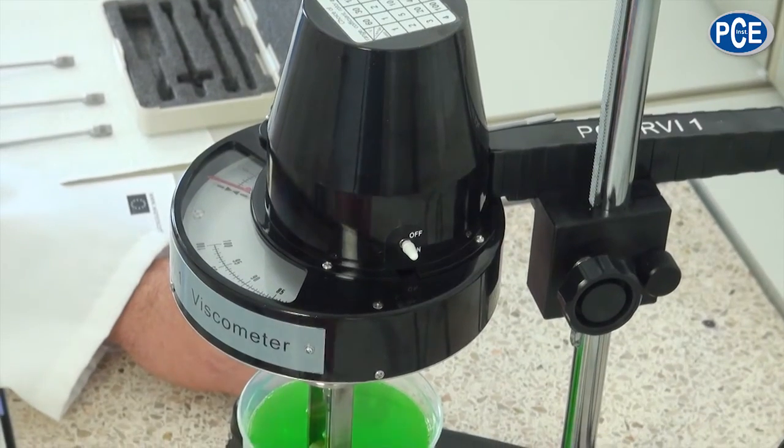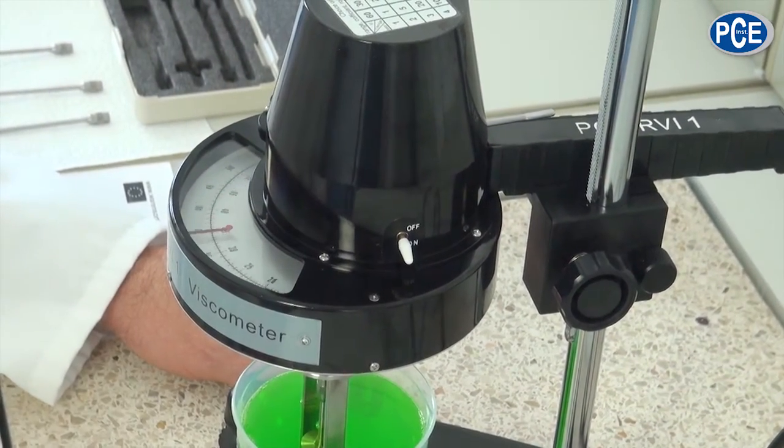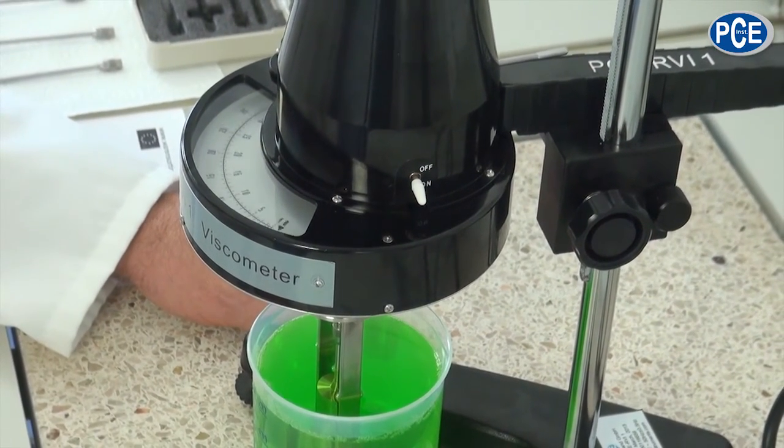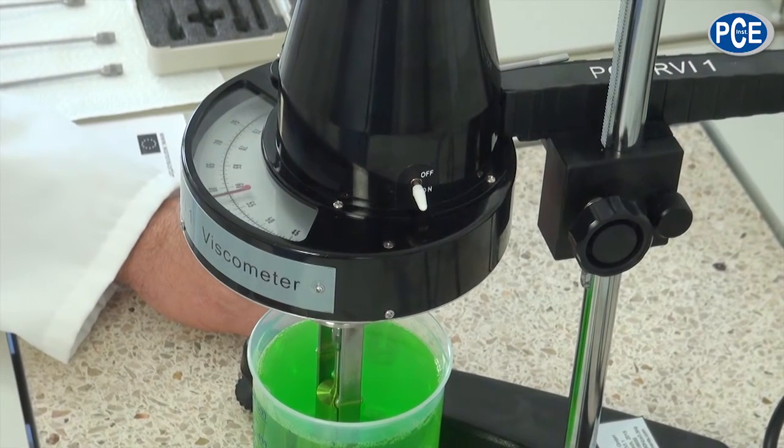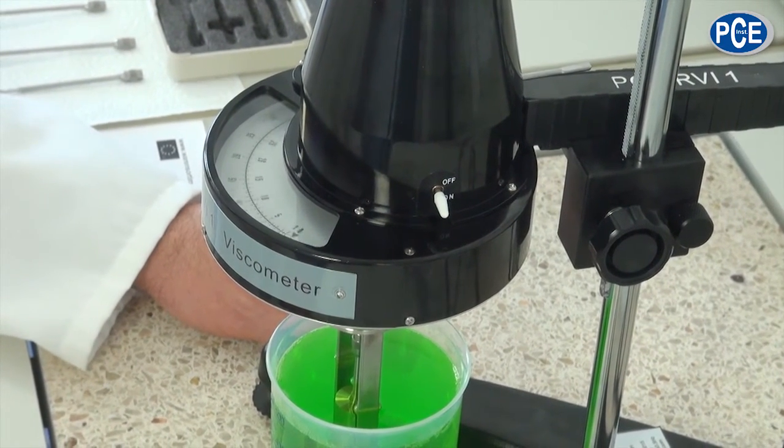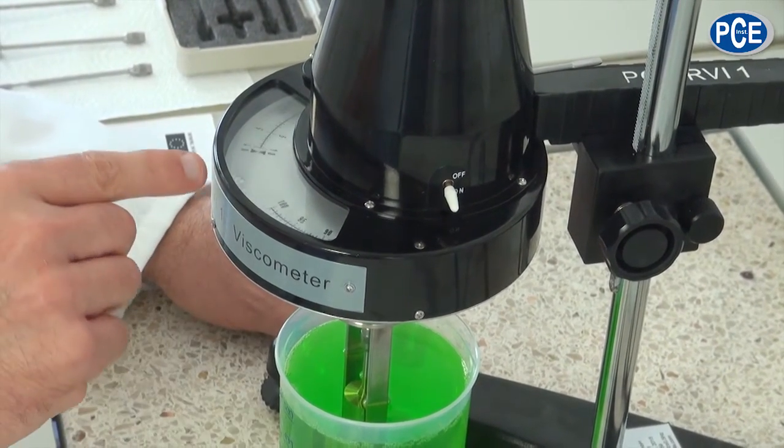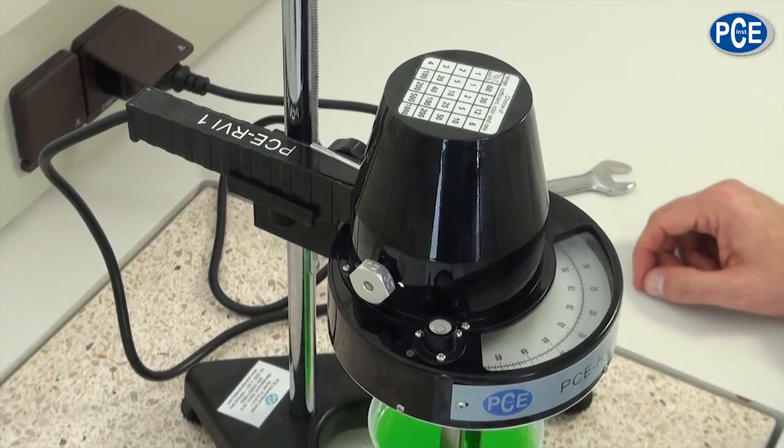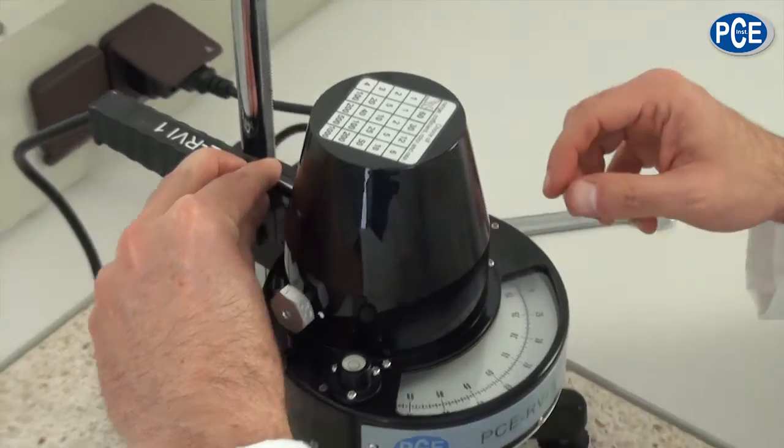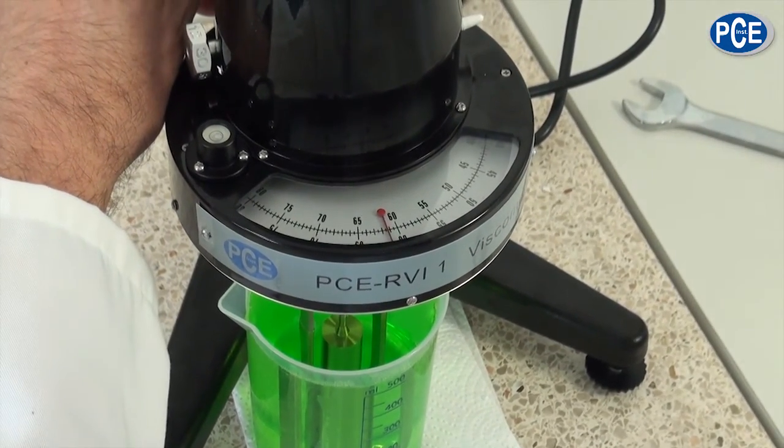We start the measurement by easily turning the on-off switch. And the rotation body starts to measure. We wait until a constant rotation is there. The rotation body has reached a constant and we can now read the viscosity on the scale. To read more clearly the fixing switch is used. And the viscometer is turned off. And now the result can be read.